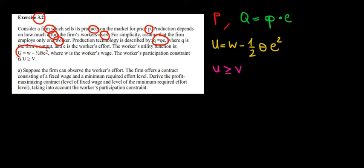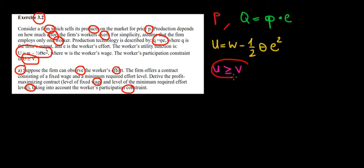We have the utility of the worker which is based on his wage and his cost of effort. We also have the participation constraint. Now in part A, suppose that the firm observes the worker's effort and we want to find the profit-maximizing level of wage and the level of minimum effort. We have to take into account the worker's participation constraint, meaning that the worker must get at least the same utility he would get in a different company.